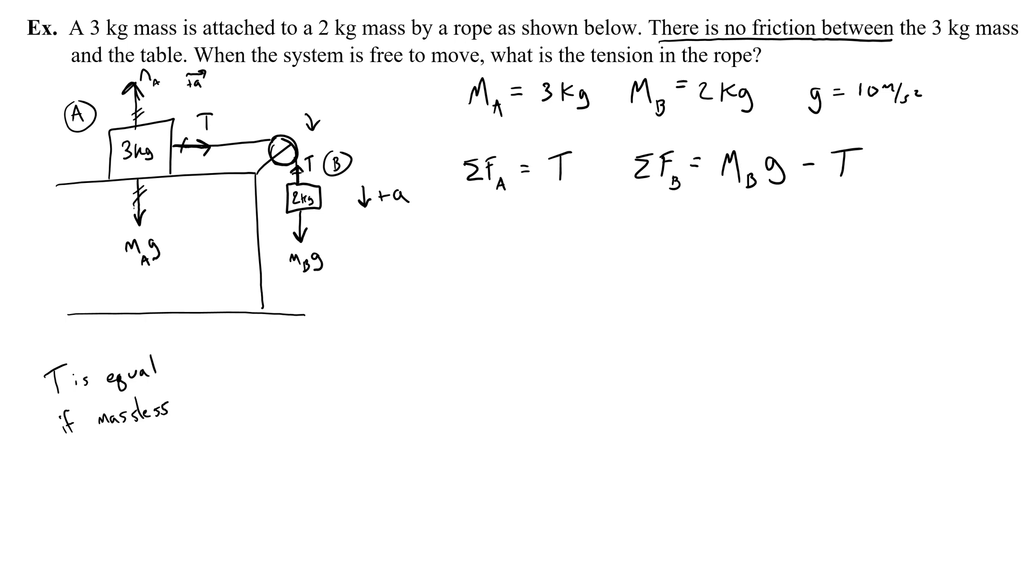Now, remember, we set these things equal to the equation for net force on each object. So for the net force on A, that's the mass of A times the acceleration. And the net force on B, that's the mass of B times the acceleration. So I know the net force on A is just the tension, T, and it equals the mass of A times the acceleration. And I know M_B g minus T equals M_B times A.